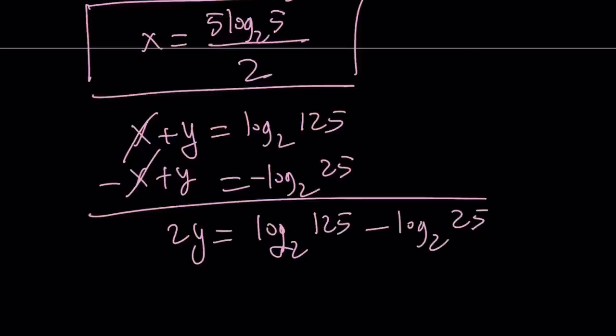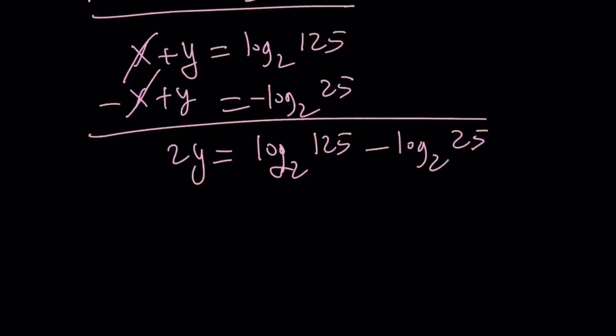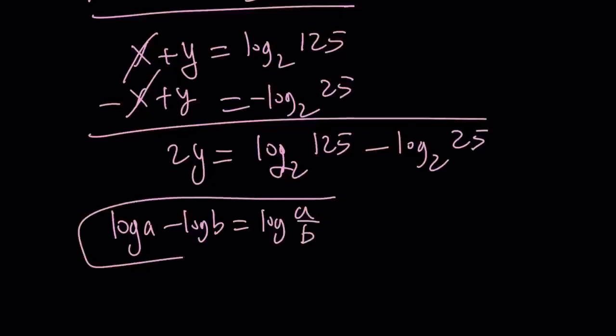They're both in base 2. Great. Now, we can combine these again by using the quotient property. If you have log a minus log b, that can be written as log a over b. Provided that b does not equal 0 and a and b are both positive, then we're going to be good.